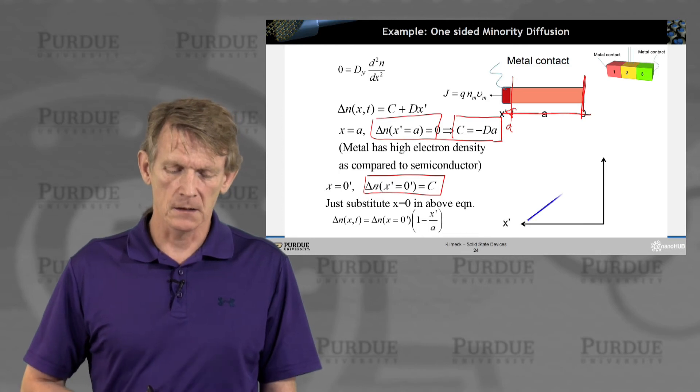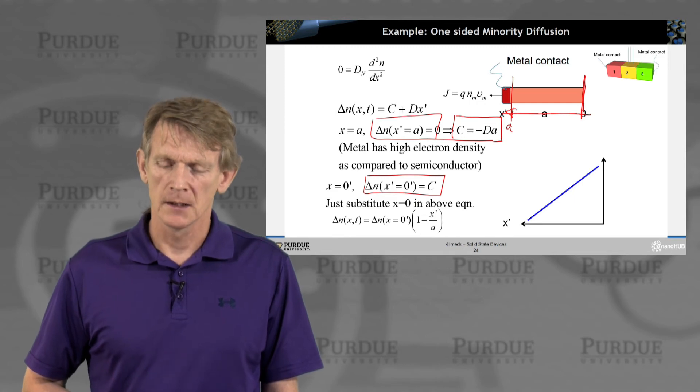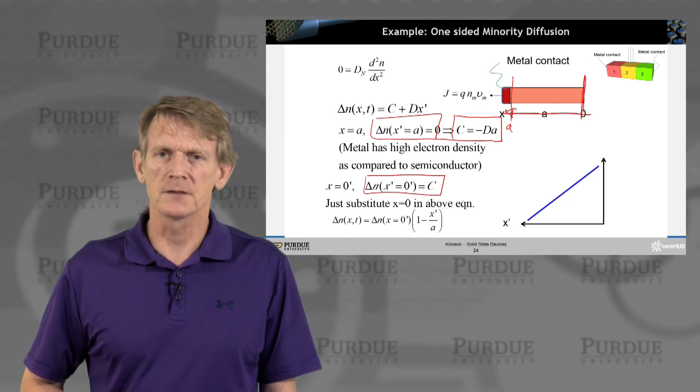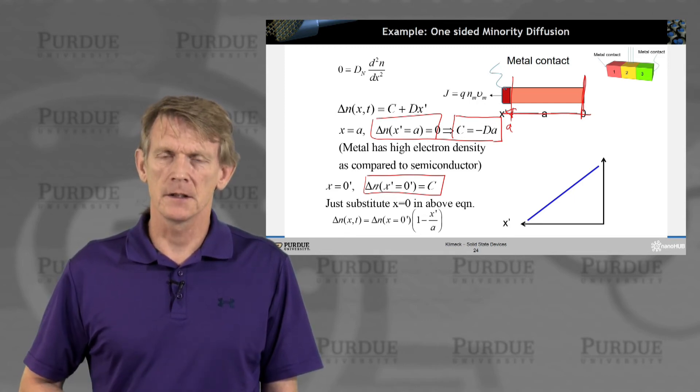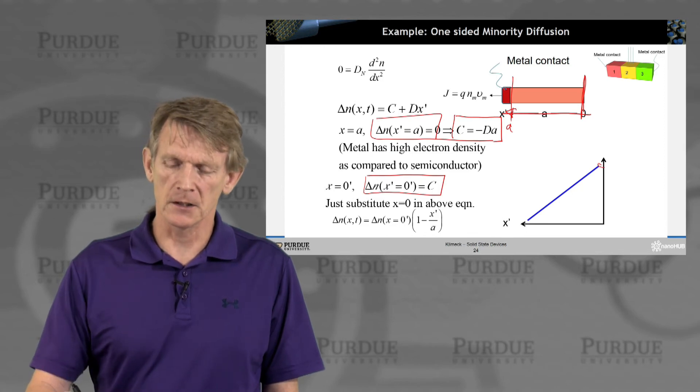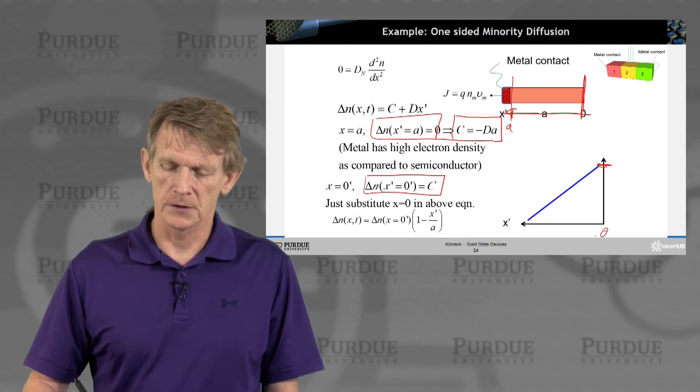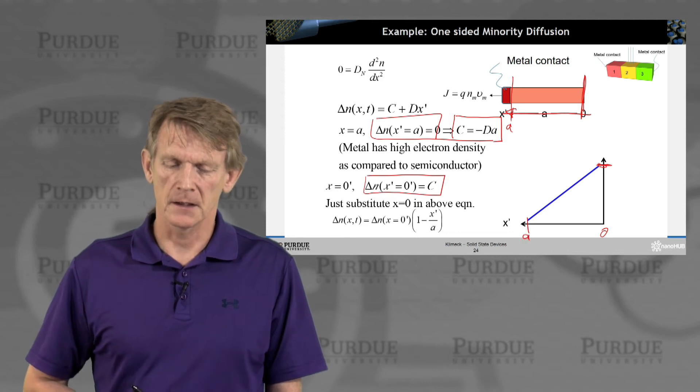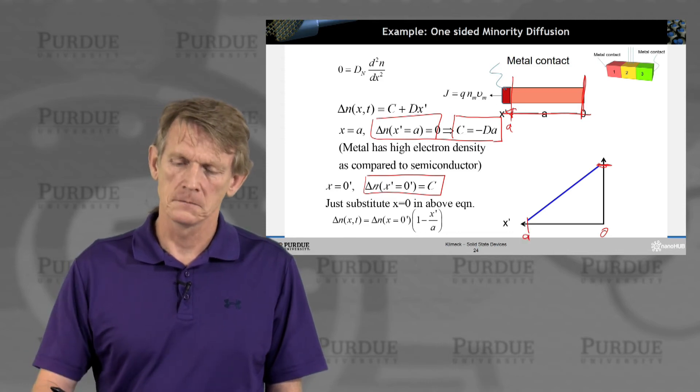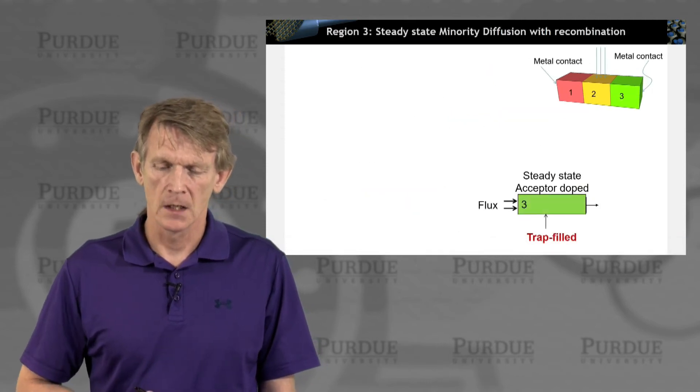Okay. So let's say we have this boundary condition and we have this level c somehow. What does the electron density look like? Well, as plotted as a function of x prime, the electron density decreases linearly in space from some injection level at position zero to the metal contact at length A. Nothing fancy here.